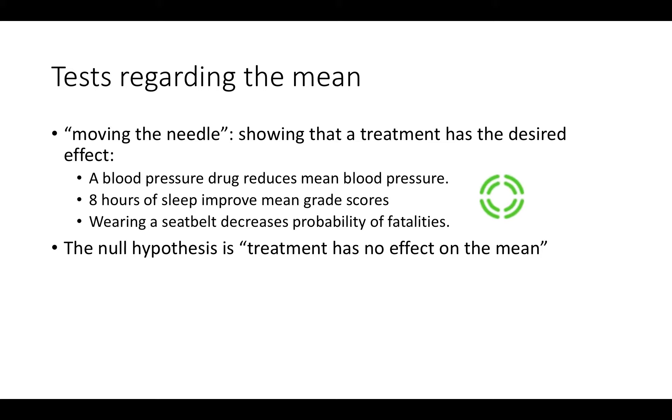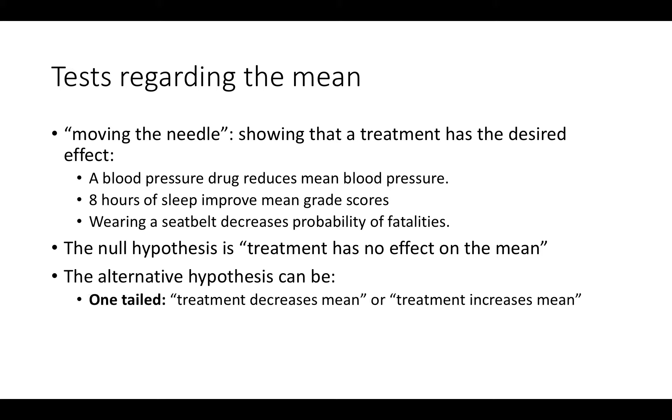What you want to do is reject the null hypothesis and establish an alternative hypothesis. Now the alternative hypothesis can come in two flavors. One is the one-tailed flavor which means that either the treatment decreases the mean,